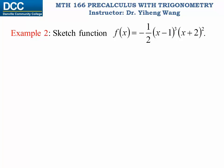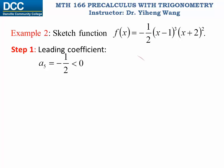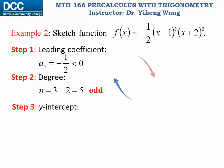Step 1 — leading coefficient test: the leading coefficient is -½, which is negative, so the right tail of the graph goes down. Step 2 — degree: the degree is 3 + 2 = 5, which is an odd number, so the left tail goes in the opposite direction — upward. Step 3 — y-intercept: substitute x = 0 to find that the y-intercept is (0, 2).